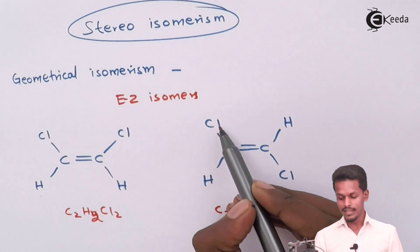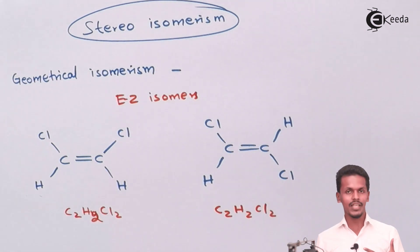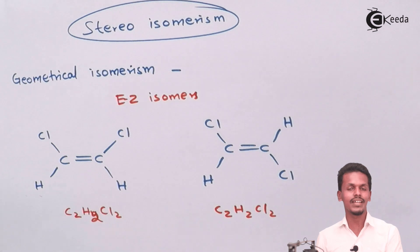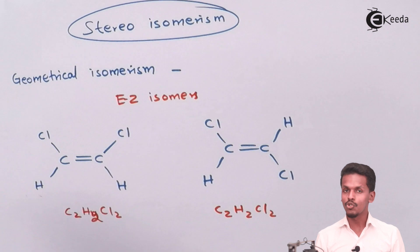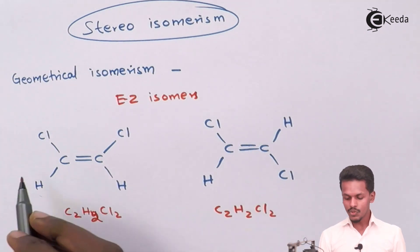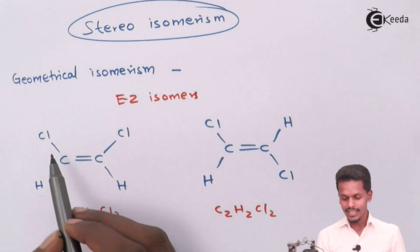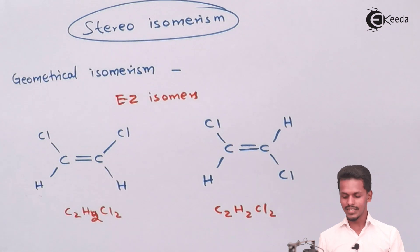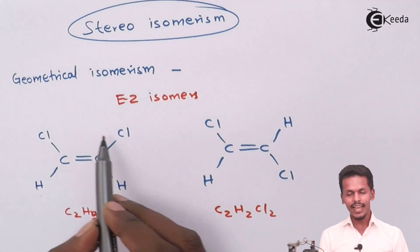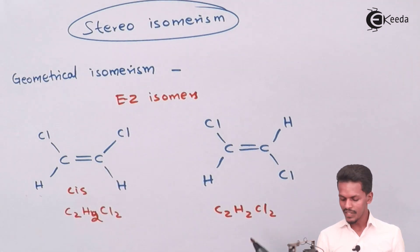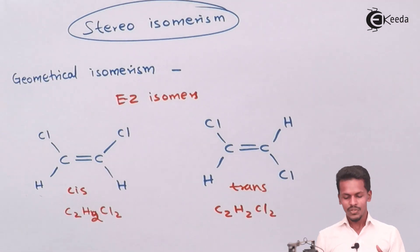In one molecule, both Cl atoms are present on the same side of the double bond plane — this is called the cis isomer. In the other molecule, one Cl is above and one is below the plane — this is called the trans isomer. They are also known as Z and E isomers respectively. The spatial arrangement of the chlorine atoms is different when we compare the two molecules, making them geometrical isomers.